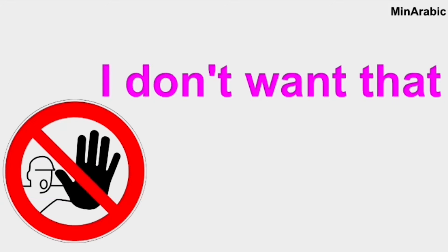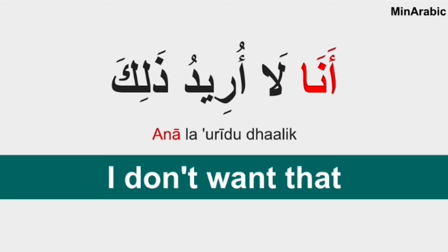Now how to say 'I don't want that'? Before giving the answer, here is a trick. In Arabic, when you want to express the negative form of a sentence, you always add 'la.' Remember la. Now we will see how to add it. 'I don't want that' is ana laa ureidu dhalik. Did you see? We added la.